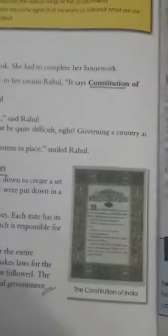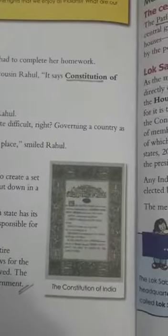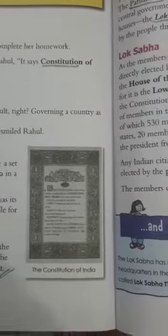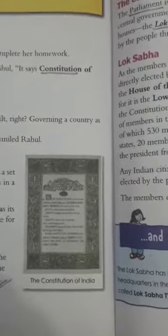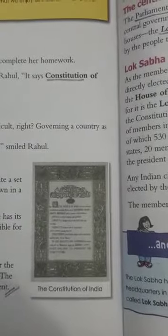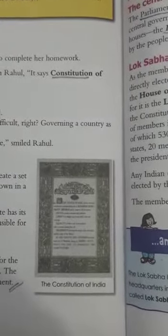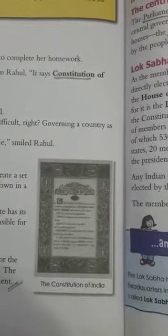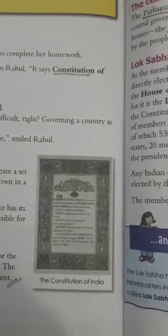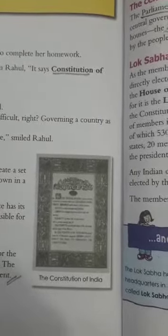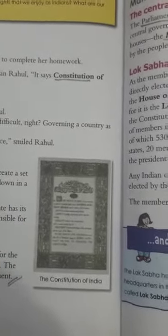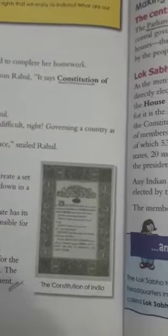Each state has its own government, called the state government, which is responsible for maintaining law and order within the state itself. There is also one overall government for the entire country, known as the central government, which makes laws for the whole country and ensures they are followed. Union territories are directly governed by the central government.